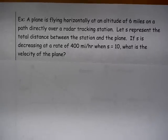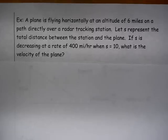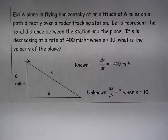We have a plane flying horizontally at an altitude of 6 miles on a path directly over a radar tracking station. Let s represent the total distance between the station and the plane. If s is decreasing at a rate of 400 miles per hour when s equals 10, what is the velocity of the plane?